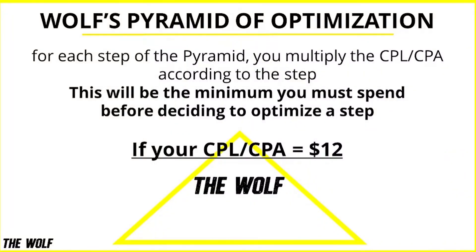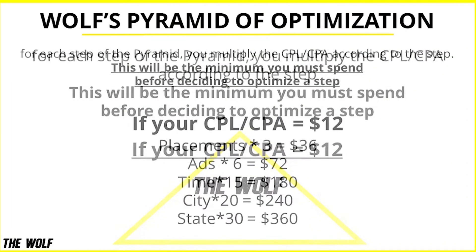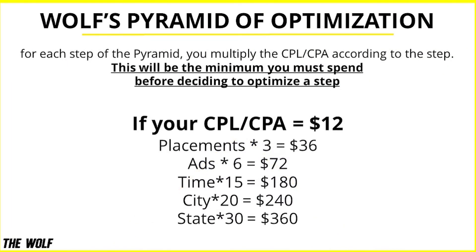So if your CPL or CPA is, for example, $12, for each step that you see right now, you multiply the CPL or CPA according to that step. So placements times three, ads times six, and so on — like you see. So you have the minimum amount.